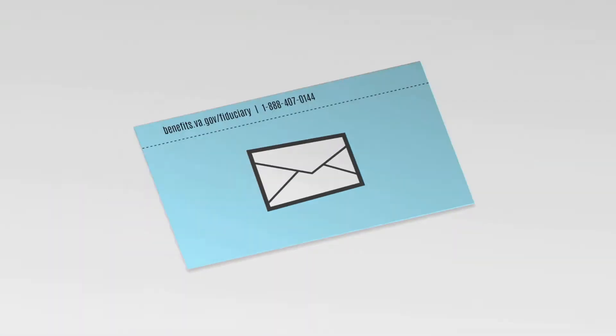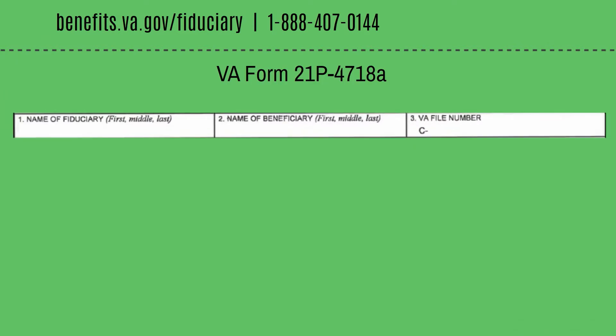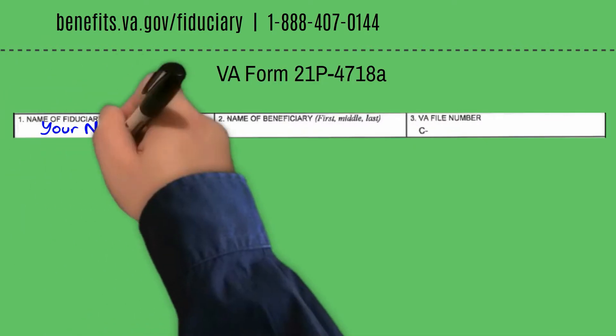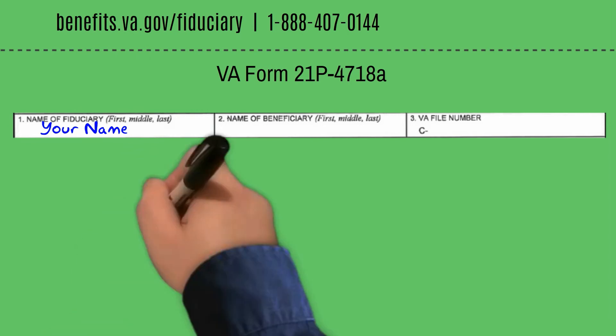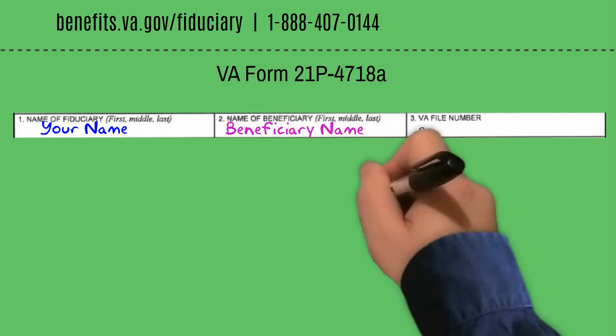Let's get started! If you are required to submit the VA Form 21P-4718A, part of the form will be completed by you, and part of the form will be completed by the financial institution where VA funds are deposited. To start, you'll complete part of the form with your name in Block 1, the beneficiary's name in Block 2, and the VA file number in Block 3.